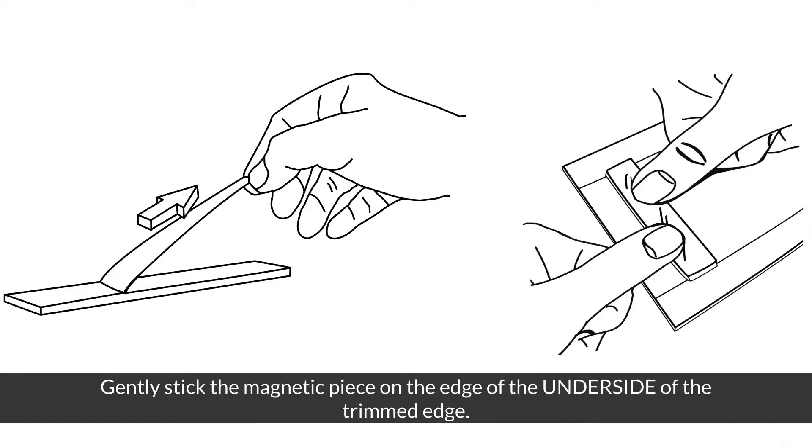Step 3. Attach a magnet. Gently stick the magnetic piece on the edge of the underside of the trimmed edge.